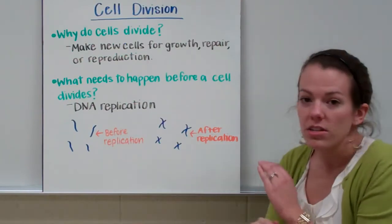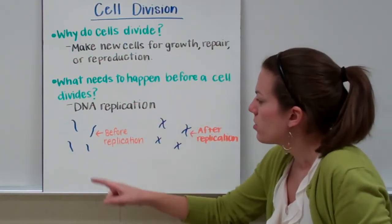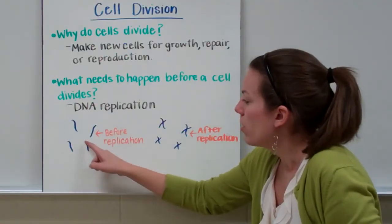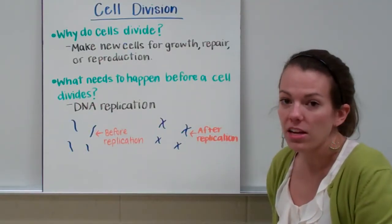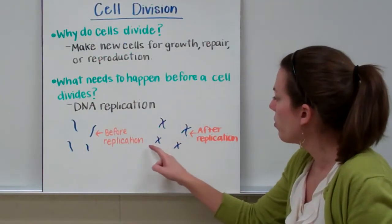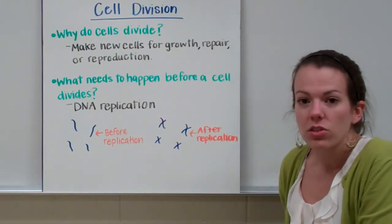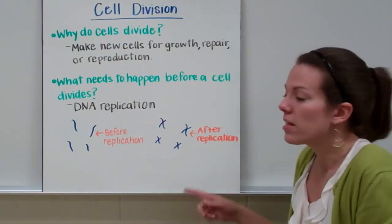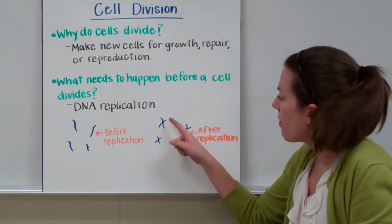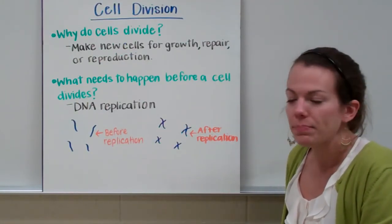Whenever the chromosomes are attached to one another, that counts as one chromosome. So we have four chromosomes before replication and four chromosomes after replication. The difference is that these chromosomes are now double chromosomes — they have a replicated strand of DNA next to them.